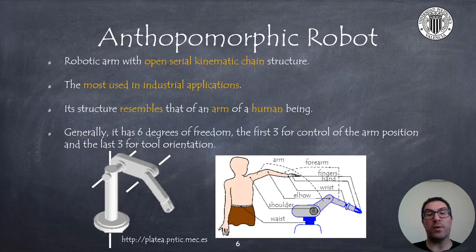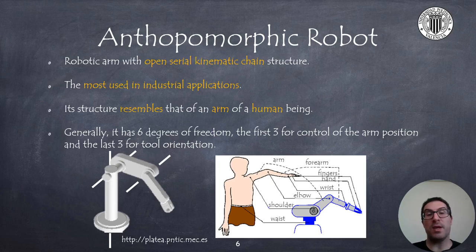An anthropomorphic robot, or simply robot arm, is a classic robot with an open kinematic chain structure. They are one of the most used industrial robots and their structure resembles a human arm, which has a waist, a shoulder, and an elbow as the first three joints for controlling the position of the tool. It also has a wrist with three degrees of freedom to control the orientation of the tool.